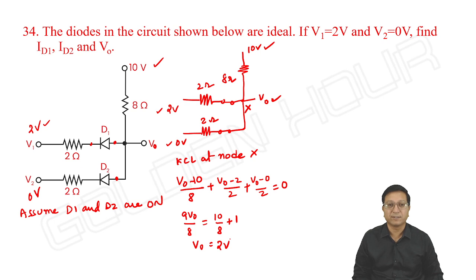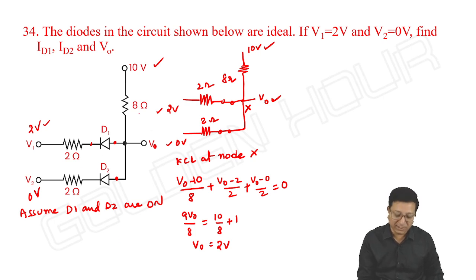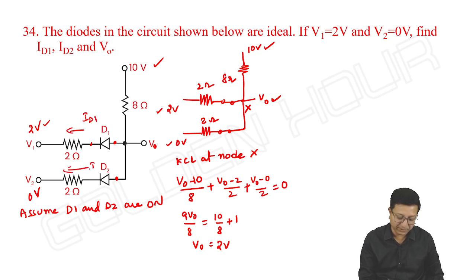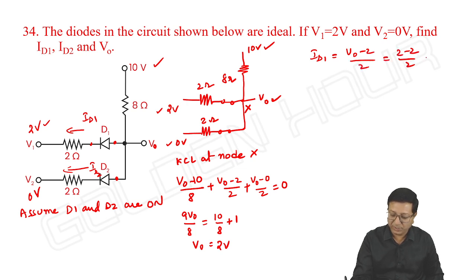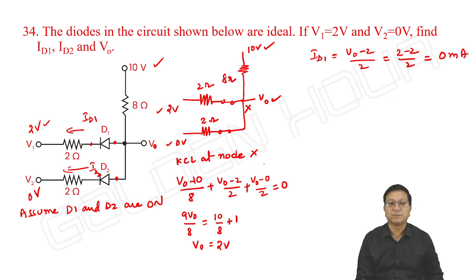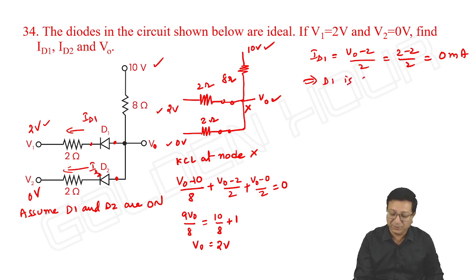So V output is equal to 2 volts. If V output is 2 volts, what will be the currents ID1 and ID2? ID1 is equal to V_output minus 2 by 2, which is 2 minus 2 by 2, giving 0 milliampere. Current through the diode is 0, which implies D1 is off.